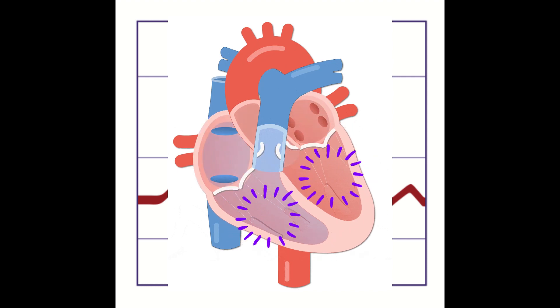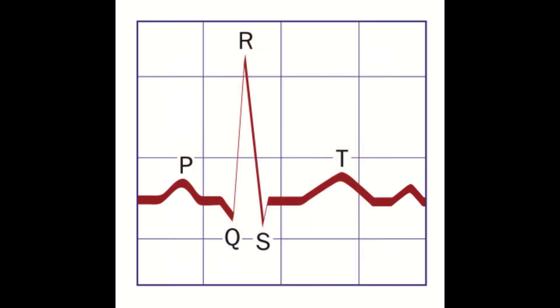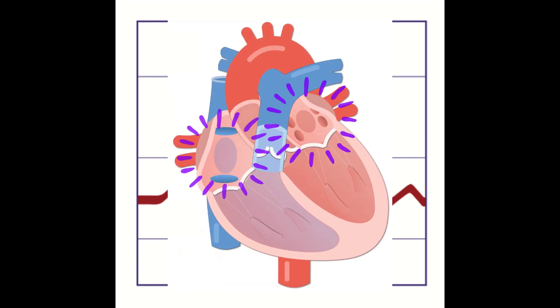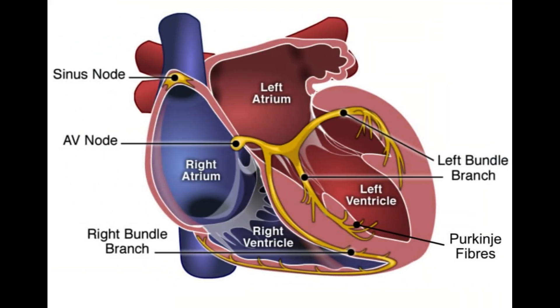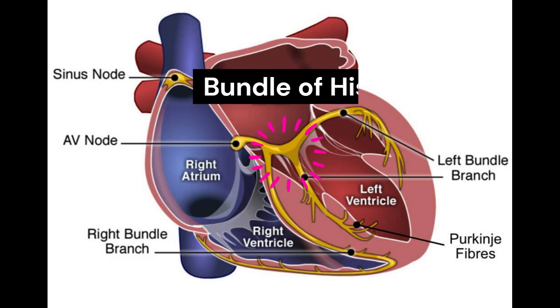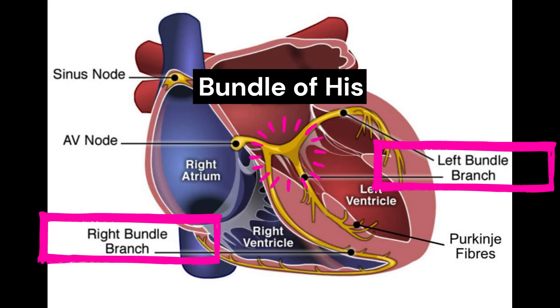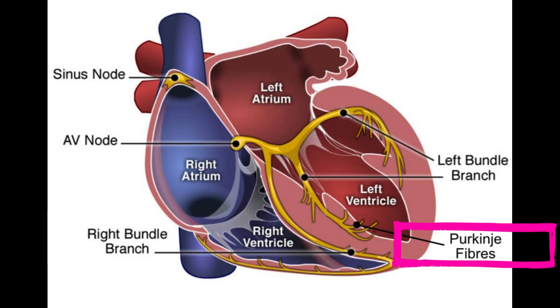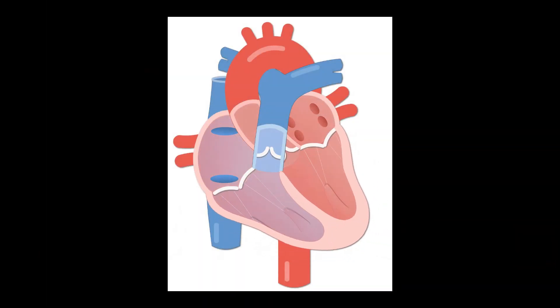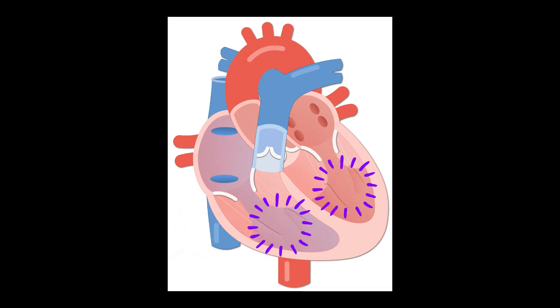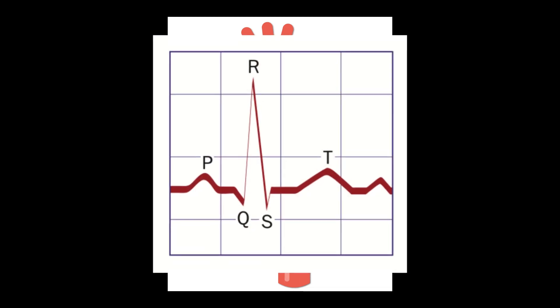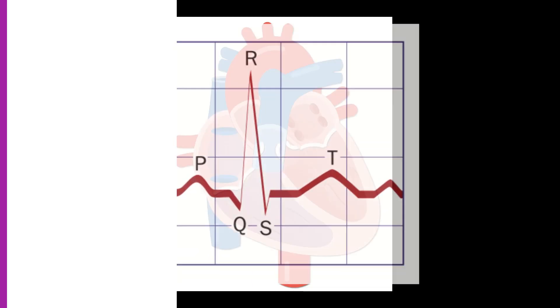During the cardiac cycle, the QRS complex follows the P wave, which represents the depolarization of the atria. As the electrical impulse spreads through the heart, it travels down the bundle of His and its branches, and then through the Purkinje fibers in the ventricular walls. This process results in the depolarization of the ventricles, which is represented by the QRS complex on the ECG.